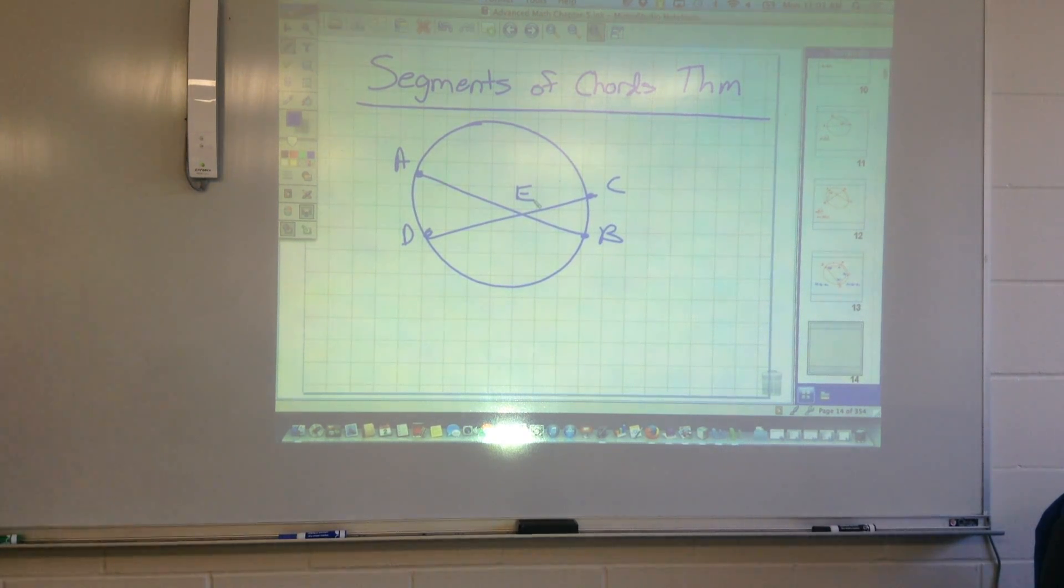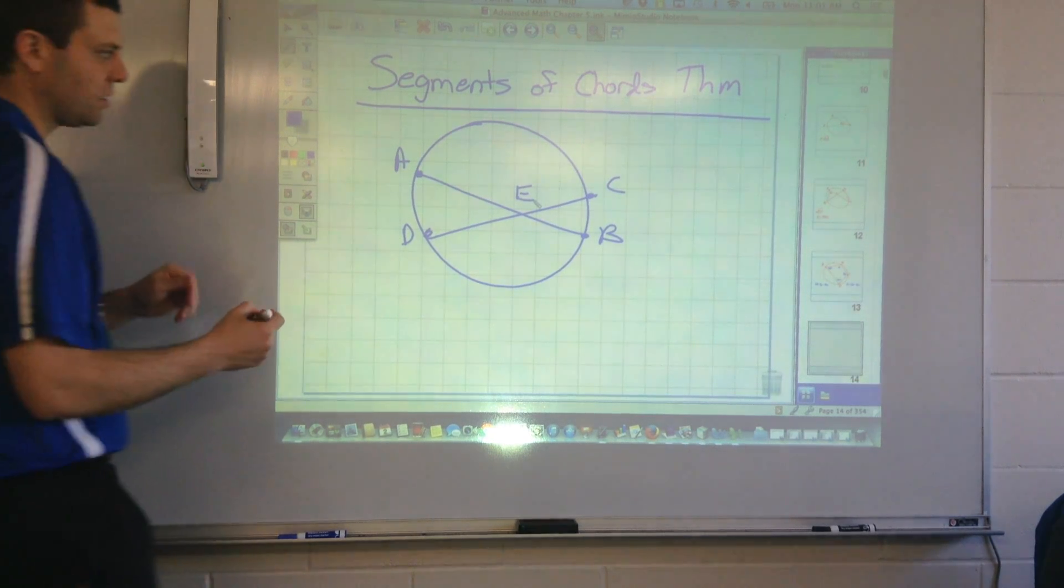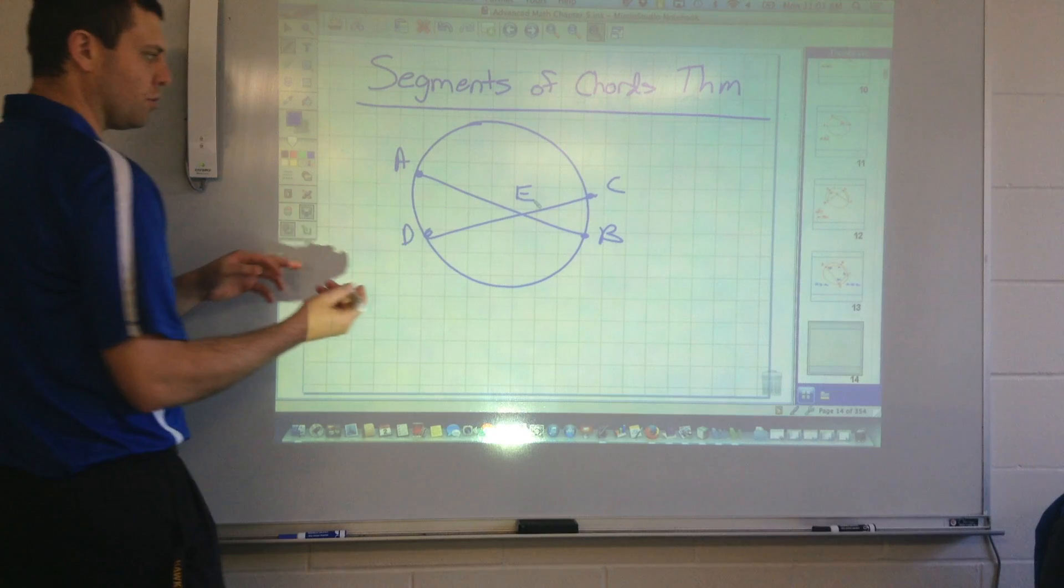And it basically is saying that if you have two chords inside of a circle and they intersect one another, they kind of split each other up proportionally, is what you can kind of say. And really all that you need to do is, you can actually do this with products so you don't have to use proportions.